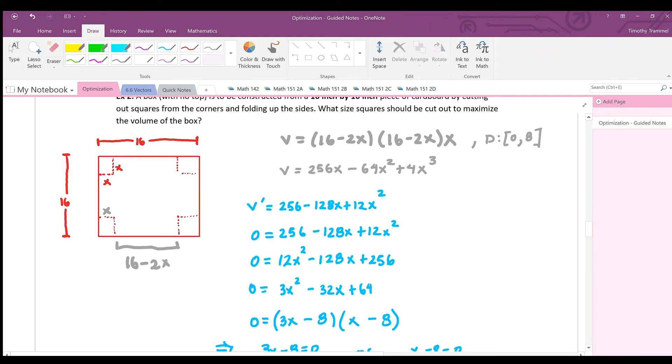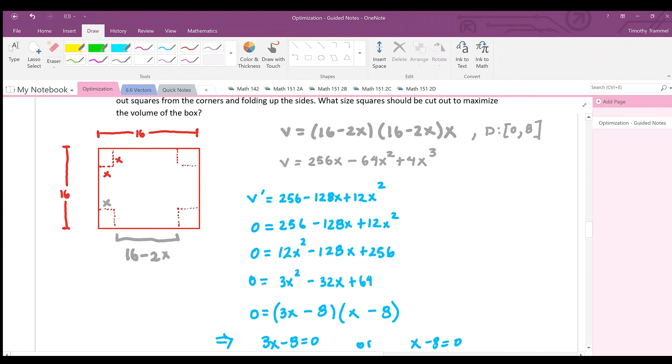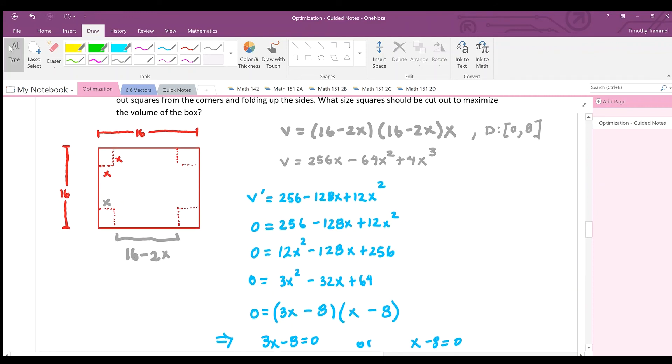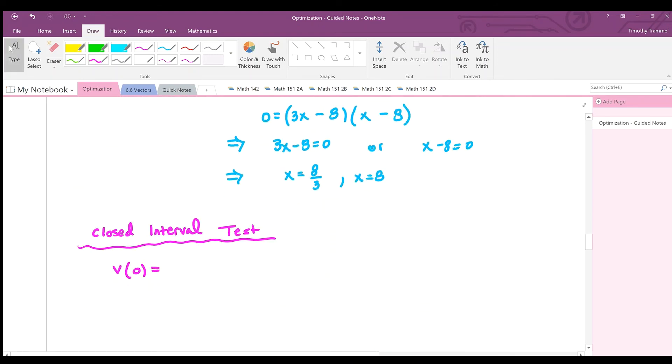Looks like we have 16 times 16 times 0 if x is 0. Go ahead and write that in here. 16 times 16 times 0, which is equal to 0. So this could be our absolute minimum, but hopefully this isn't our absolute maximum. Let's next test the other endpoint, 8. And if you do that, this also results in a volume of 0.